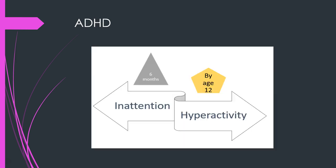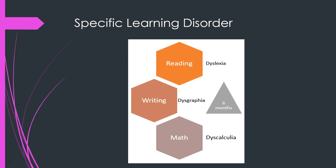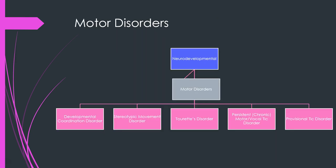ADHD — attention deficit and hyperactivity disorder — needs to occur for at least six months and develop by age 12, with diagnostic criteria related to inattention and hyperactivity. Specific learning disorder can involve reading, writing, or math and also needs to last about six months. Another category within neurodevelopmental is motor disorders; people might be most familiar with Tourette's disorder.